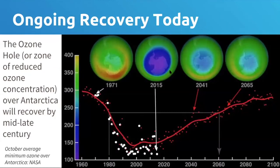We can already see the recovery of ozone in the atmosphere as a consequence. For various dynamical reasons, the depletion of ozone was particularly extreme over the Southern Hemisphere, which coined the term 'ozone hole' — a region of reduced ozone concentration centered over the Antarctic continent. But it's been recovering and should recover fully by the mid to late century because we took such rapid action to reduce our CFC emissions.